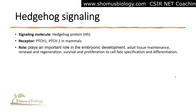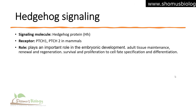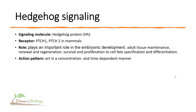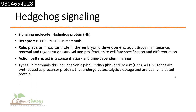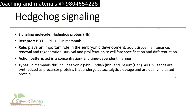The role of Hedgehog signaling is in embryonic development, adult tissue maintenance, renewal and regeneration, survival and proliferation, cell-fate specification and differentiation. It acts in a concentration- and time-dependent manner. The types of Hedgehog signaling in mammals are Sonic Hedgehog (SHH), Indian Hedgehog (IHH), and Desert Hedgehog (DHH).